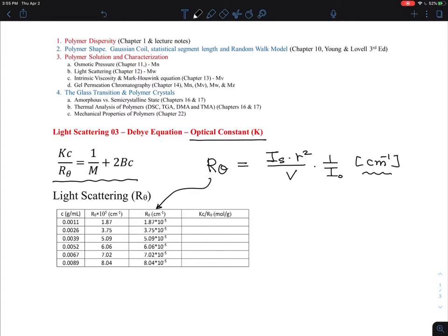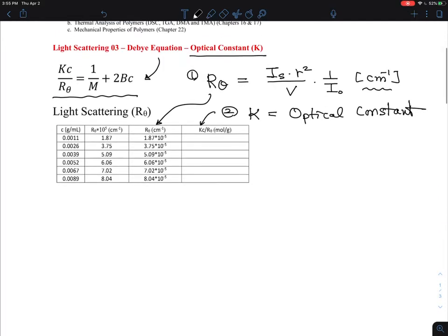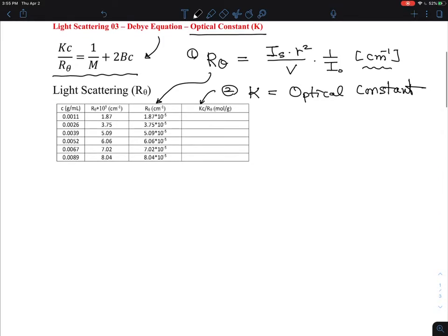So to complete this Debye equation that's shown up here, we need to figure out what this K value means. So this is number 2, which is K, and that is known as an optical constant. It's just a number, and it has a quite interesting unit. So when you do the light scattering experiment, you need to define the K, that's an optical constant.